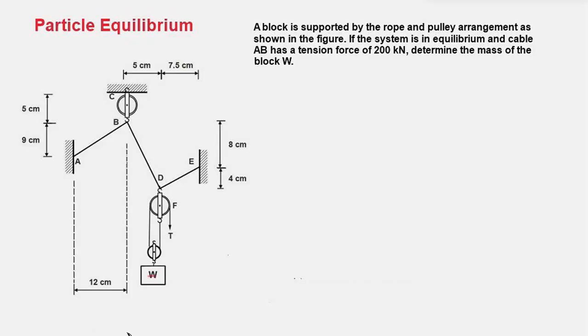In this video we are going to solve a particle equilibrium problem. What you see here is a rope and pulley arrangement, and this block is supported by this system of pulleys and the rope. We have to find the mass of this block, given the tension in the cable section AB is 200 kilonewtons. What should be the approach to solving this problem?